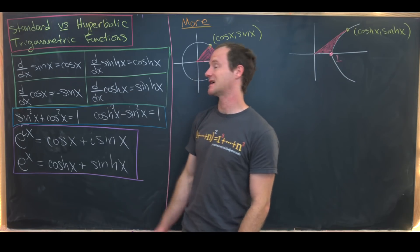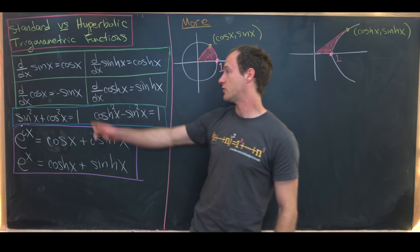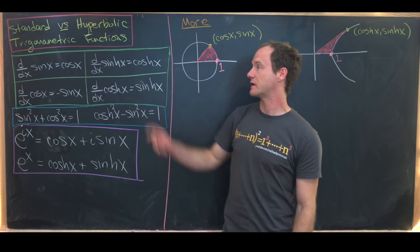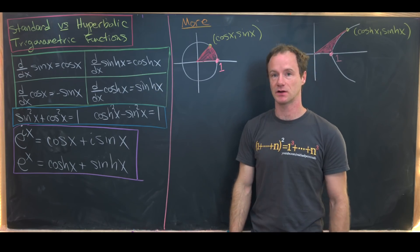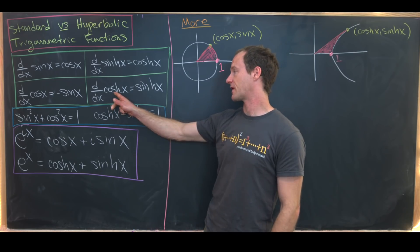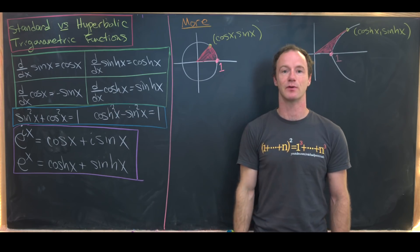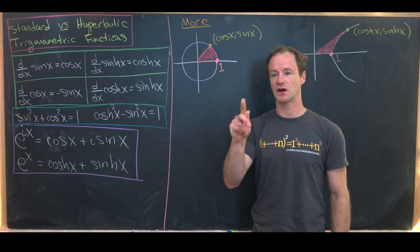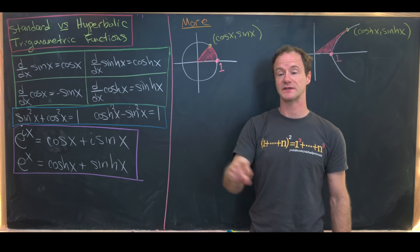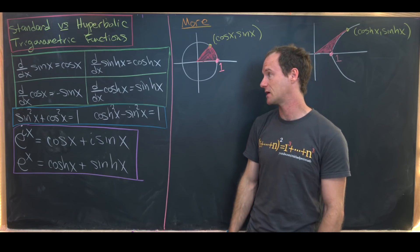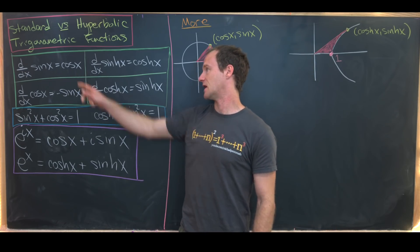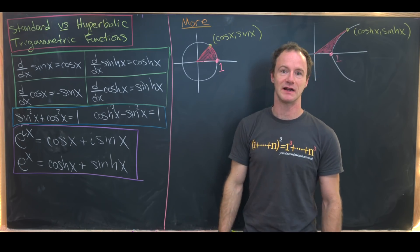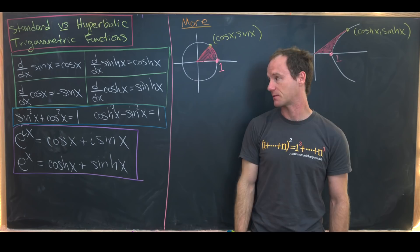The derivative of sine is cosine, and the derivative of cosine is negative sine. Whereas the derivative of the hyperbolic sine is the hyperbolic cosine, and the derivative of the hyperbolic cosine is the hyperbolic sine. So they have this nice looping effect under the derivative, where you go from sine to cosine and back. You pick up a minus sign in the regular trigonometric part, but you never pick up a minus sign in the hyperbolic trigonometric part.